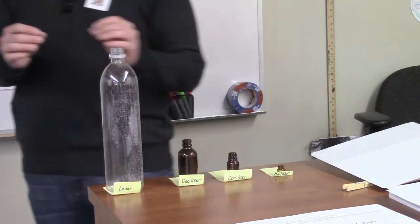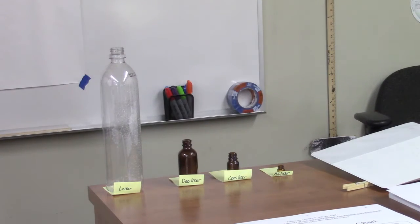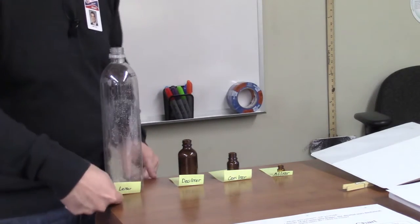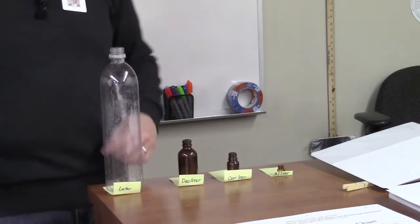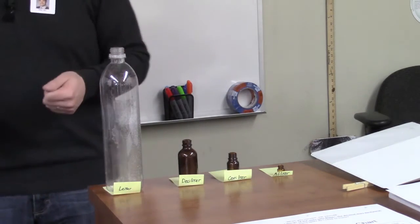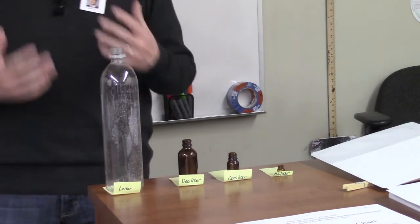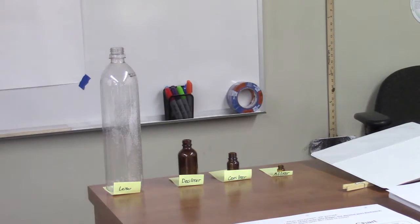The reason that scientists like to use the metric system is that it makes it really easy to go from one unit to another. You don't have to worry about converting ounces to gallons or pints like you do in the imperial system. So I'm going to draw a poster to show you what the metric system is all about and how to convert from one unit to the other.